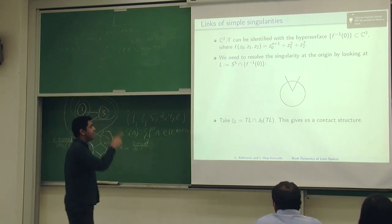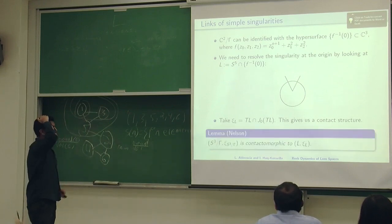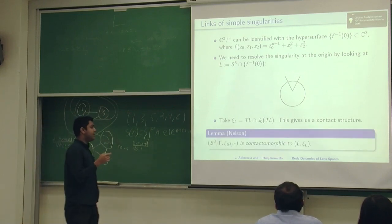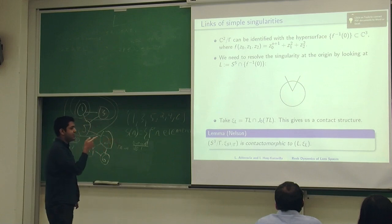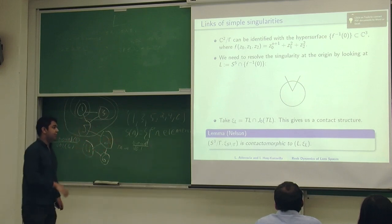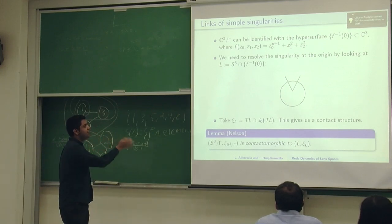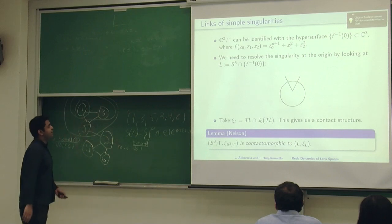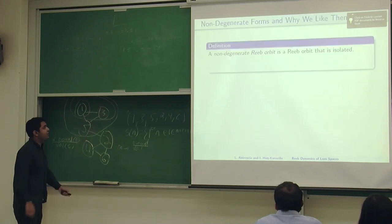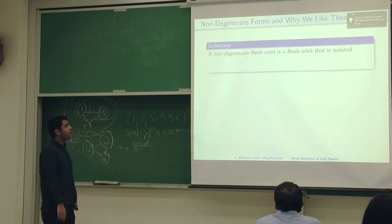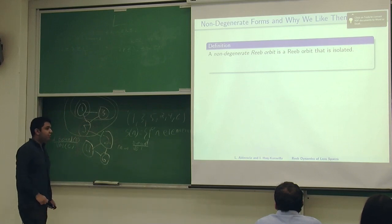Now you have these two contact manifolds. Let's ask our supervisors, is it that they're contactomorphic? So we can look at this one when we want to study the previous one. We are interested in the dynamics of the Reeb vector field on this. To study that properly, we need to make a non-degenerate form.